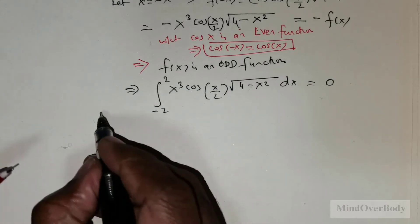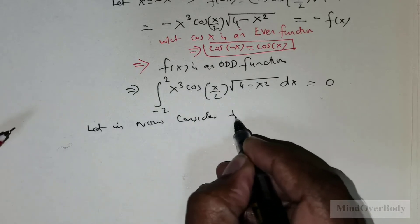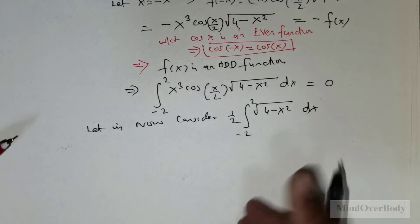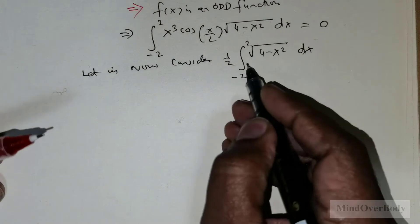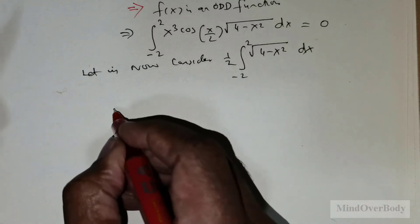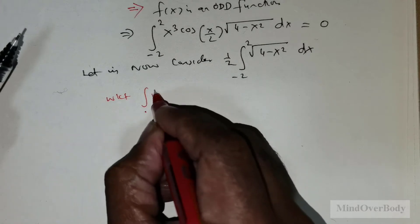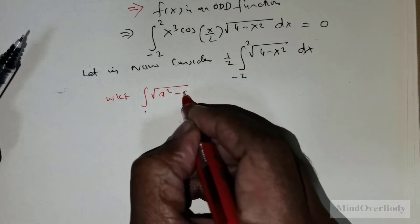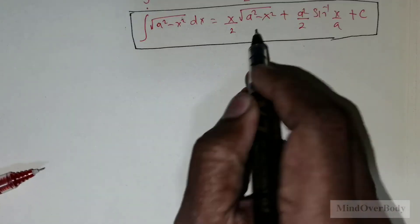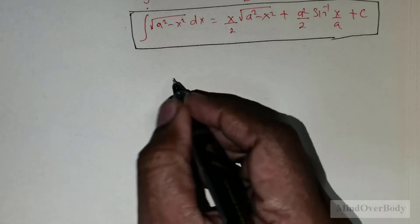Moving on, let us now consider 1/2 times the integral from negative 2 to 2 of √(4 - x²) dx. There is a formula for handling this, and I would show you how to obtain that formula. We know that ∫√(a² - x²) dx = (x/2)√(a² - x²) + (a²/2) sin⁻¹(x/a) + C.